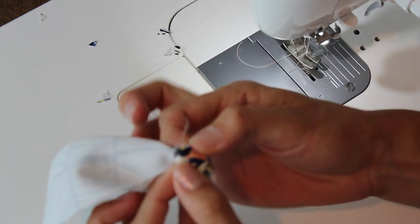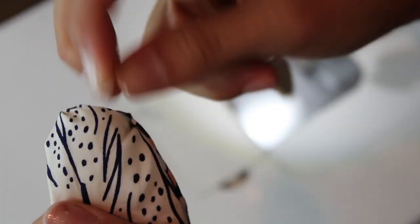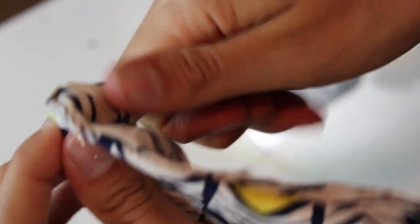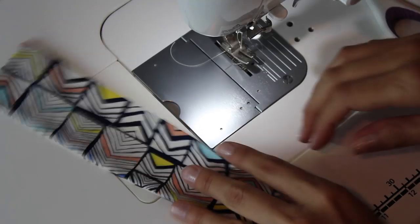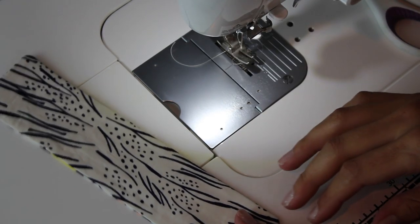So now go ahead and flip out your handle. It could take a little bit of work. It's a little tricky sometimes. But flip that out. You can use a point turner or a chopstick or whatever you have to kind of really get in there and get those points popped out and nice and neat looking. Give it a nice good press. Here's what it looks like.